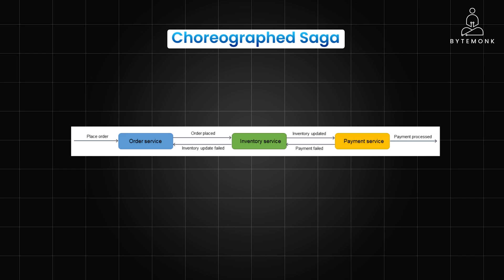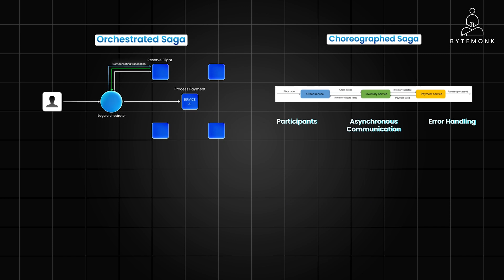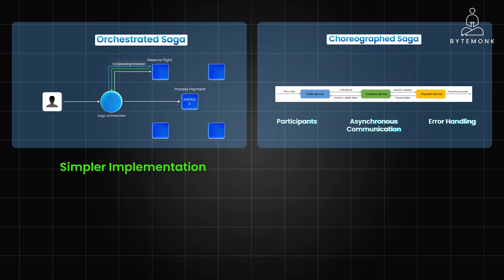In a choreographed saga, there is no central conductor. Participants communicate directly through events, reacting to events emitted by others. Each service listens for events emitted by other services and acts autonomously. Events trigger actions in other services, and services handle failures by emitting compensating events to trigger rollback actions in other services. In the orchestrator approach, the implementation is much simpler because each service only needs to respond to commands from the orchestrator, not interpret events from all other services. The central orchestrator also provides a clear audit trail of the saga process.